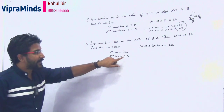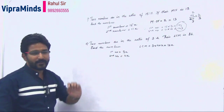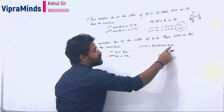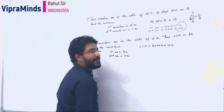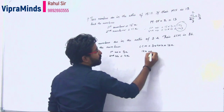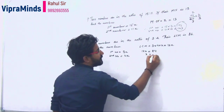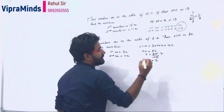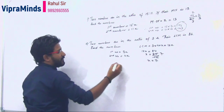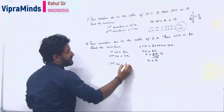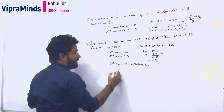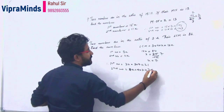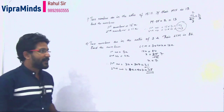The LCM of 3x and 4x is 12x. We know the LCM is 84, so 12x equals 84. Therefore x equals 84 divided by 12, which is 7. Since x is 7, the first number is 3 into 7, which is 21, and the second number is 4 into 7, which is 28. So the two numbers are 21 and 28.